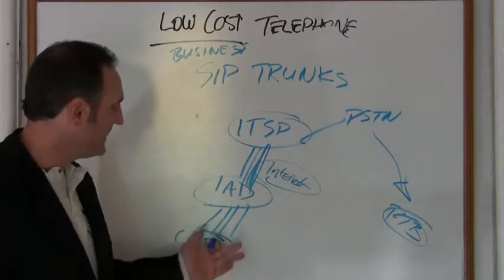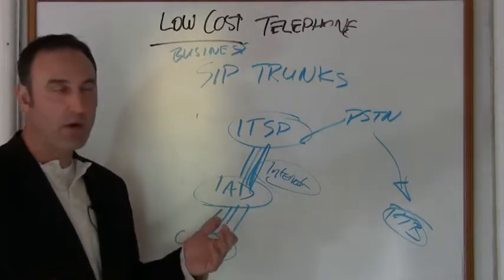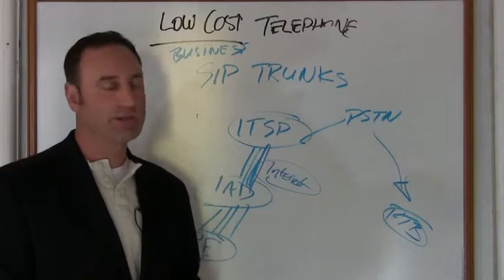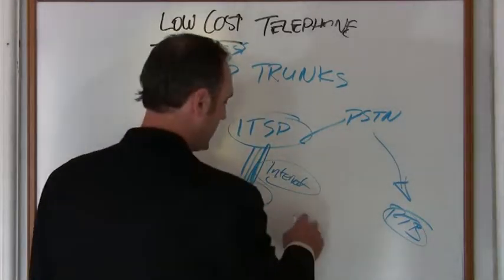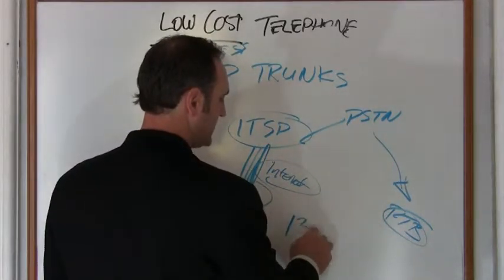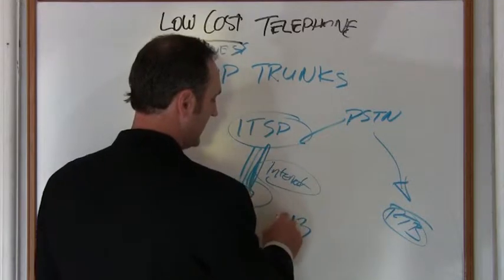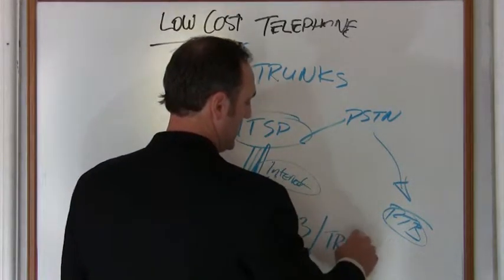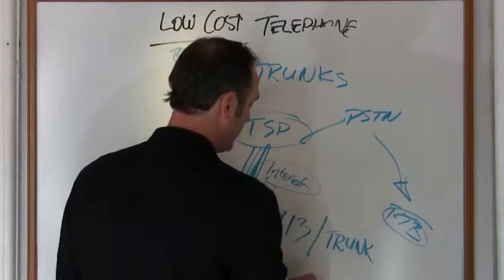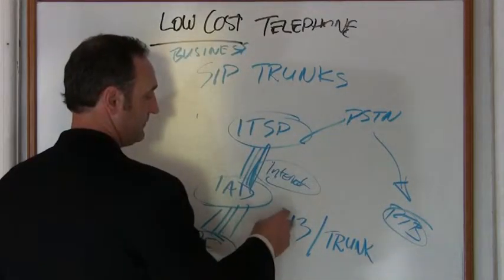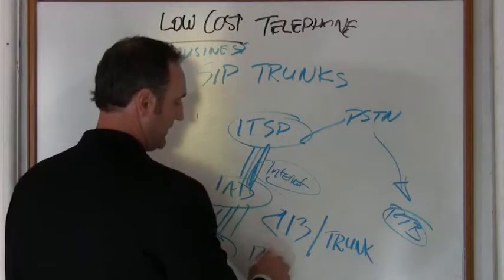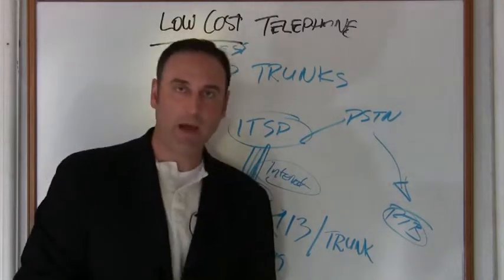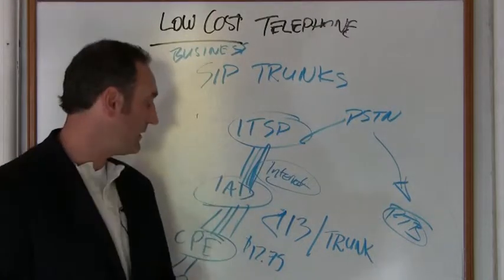One of the things you want to look at is how many trunks you have. In this case, they call them concurrent call sessions. In terms of cost, it's less than $13 a month per trunk. Depending on the term level you're looking for, it's around $12.75.